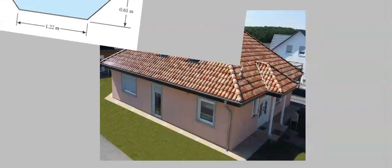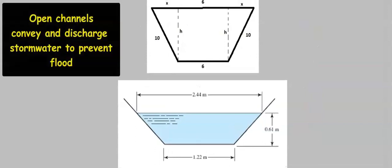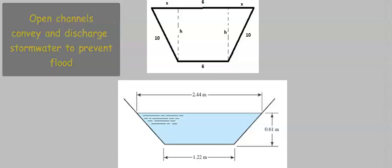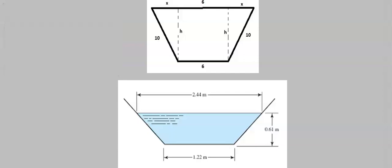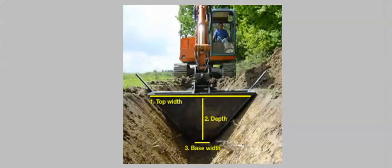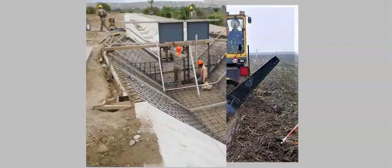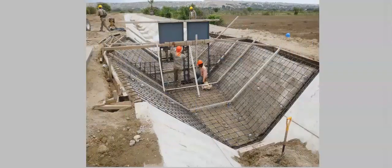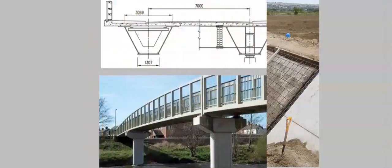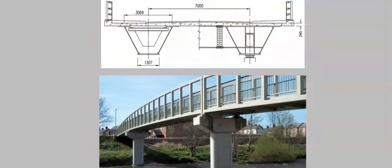In construction, open channels allow storm water to be conveyed and discharged to prevent flooding. Trapezoidal excavator buckets allow for the construction of drainage systems and irrigation infrastructures on a canal. Trapezoidal box girders also allow for certain design and construction applications.